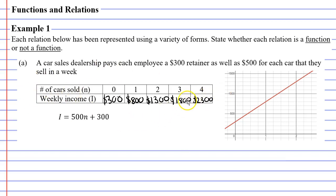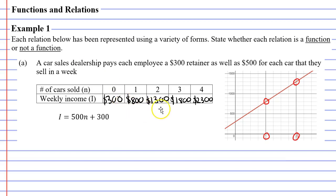The table of values is very useful because we want to see whether we're getting one output for each input or more than one output. Here we're only getting one output each time. We can also see this on the graph — if I pick an input of one I get an output of $800, and an input of two gives $1,300, matching our table. Each input gives a maximum of one output, so this is definitely a function.